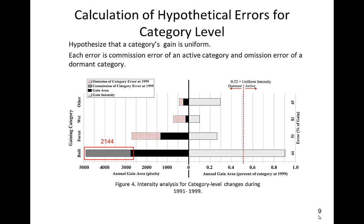Omission errors in 1999 could explain dormant categories, meaning the map of 1999 might show less than the correct amount of the category. For example, if there were 1,366 pixels of omission error of forest at 1999, then those same erroneous pixels could explain why forest's gain appears dormant. We compute the minimum overall error that could account for all deviations. Each pixel of error is simultaneously commission of an active category and omission of a dormant category. Thus, the sum of all commission errors equals the sum of all omission errors. Analysis of losses is similar to this analysis of gains.